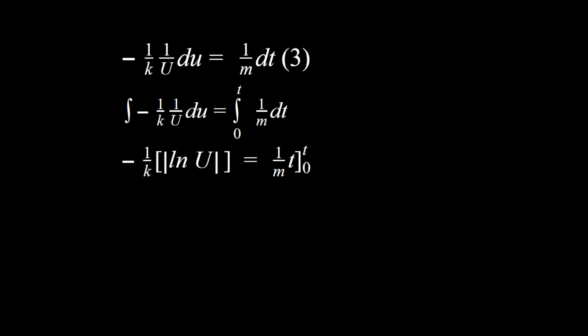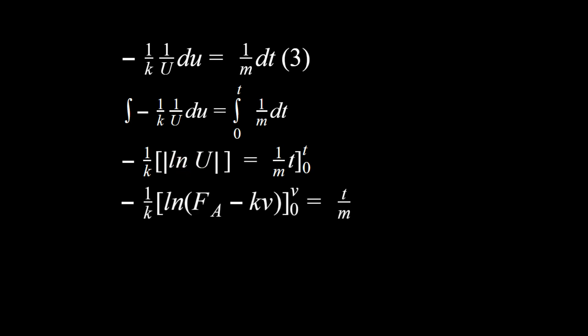Taking the integral of 1/u with respect to u gives the natural log of the absolute value of u. I'm pulling out the minus 1/k factor and saving the bounds for later, after substituting back in what u equals. On the right-hand side, pulling out 1/m gives t/m. I then clean up by moving the minus 1/k term to the other side, making it minus k in the numerator.